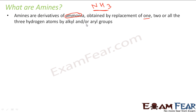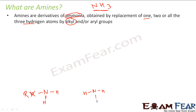Ammonia has three hydrogens. You replace either one hydrogen with an alkyl or aryl group — instead of H, you make it R. This is one amine. Another case is you replace two H with R — this is also an amine. Or you replace all three H with R — this is also an amine.